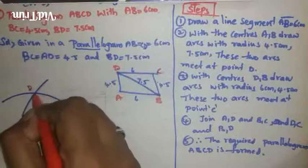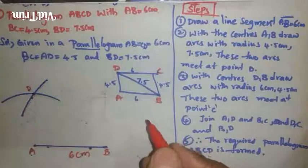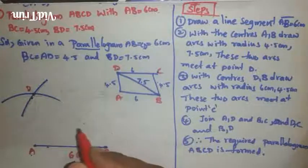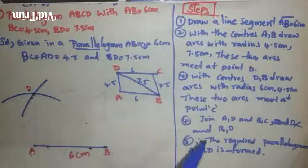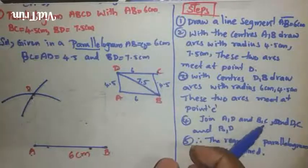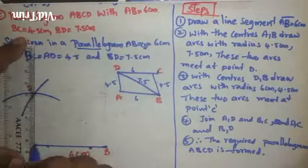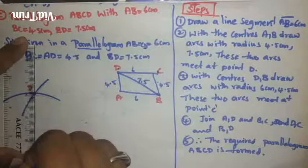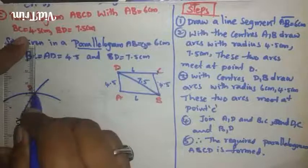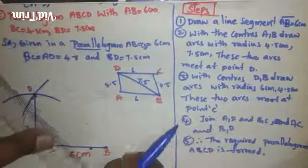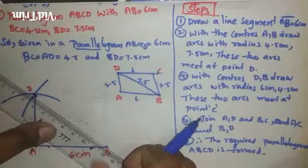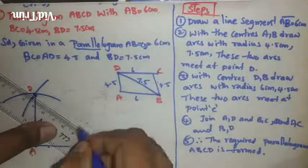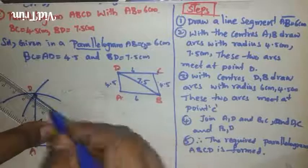Now these two arcs meet at a point. The point from here is D. Now let us join. I have given: join AD. Now join A to D, next B to D. Join B to D.